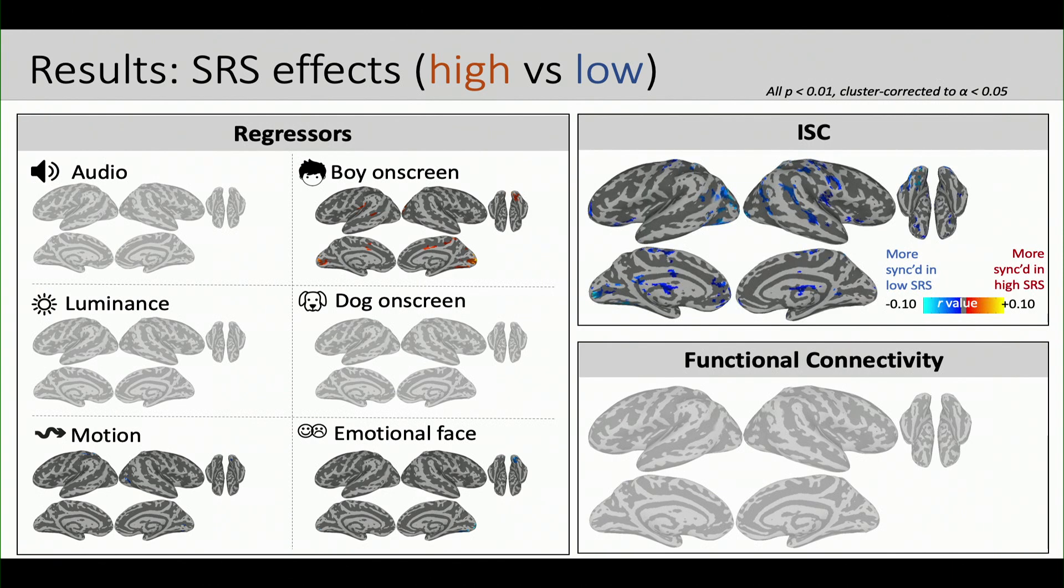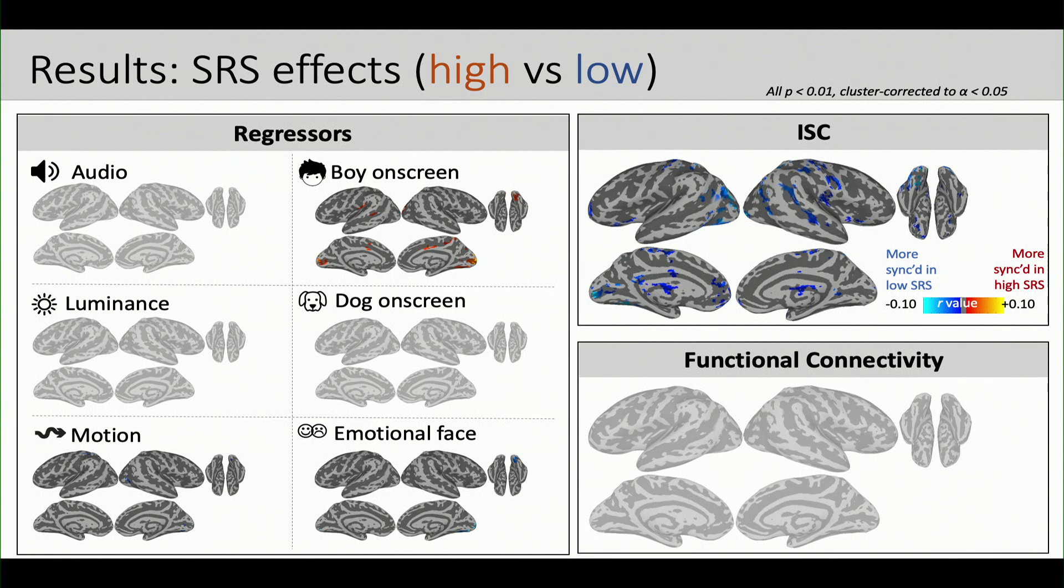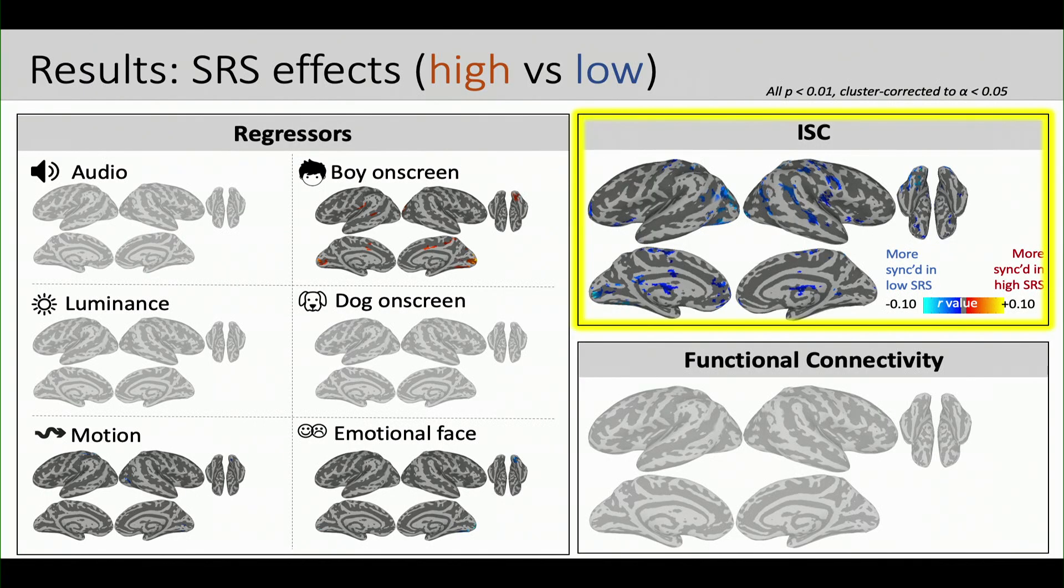On the other hand, when we look at intersubject correlation, we see several regions popping up, and these are all in the direction of these blue regions here are more synchronized in the low SRS scores, which are the children that have better social function, compared to the higher or the more impaired kids. This is an interesting map. You may recognize some regions here, so we see some social regions perhaps in the temporal lobe as well as medial prefrontal. But basically, my takeaway from this initial set of analyses is that this intersubject correlation is really showing the greatest sensitivity to this phenotypic difference. And what that tells me is that there is something that's time-locked in the stimulus that's differentiating these children, but we're not necessarily capturing it with our encoding models or with these particular regressors that we've chosen to use. So there's some sort of zeitgeist going on as these kids are watching that's scaling in some way with this phenotype, and the ISC is doing the best job of pulling that out.